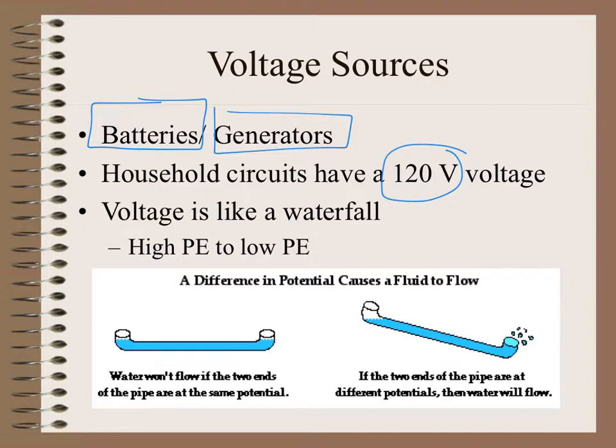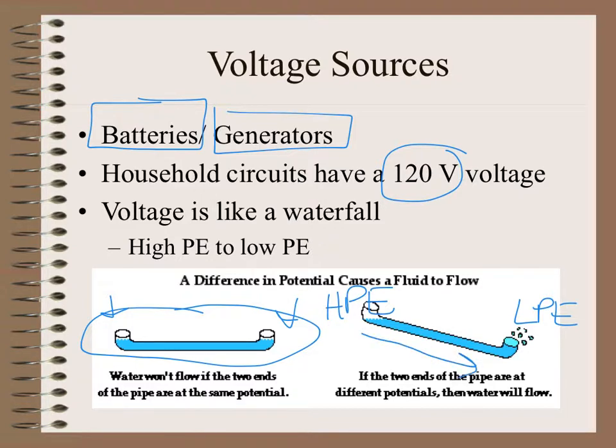Remember, volts are like water. If you have a pipe with water that is level, there's no difference in potential energy. On either end, water won't flow. But if you have it hiked up at one end with high potential energy and lower at low potential energy at the other side, obviously, the water is going to flow to the lower energy. It's the same with electricity.